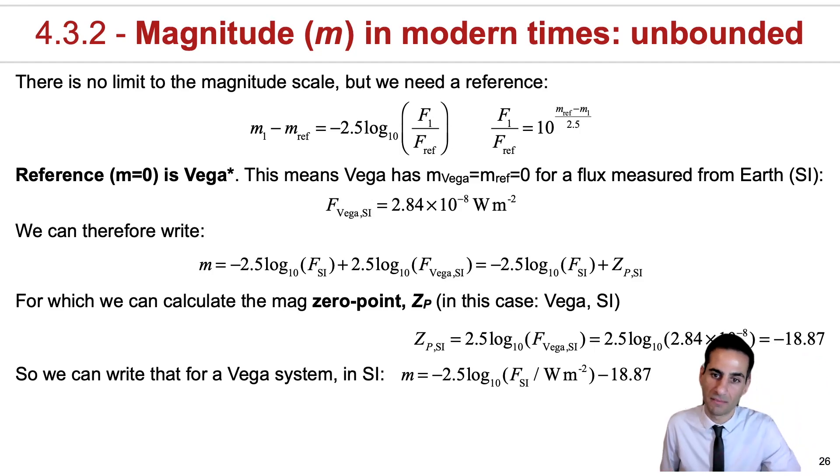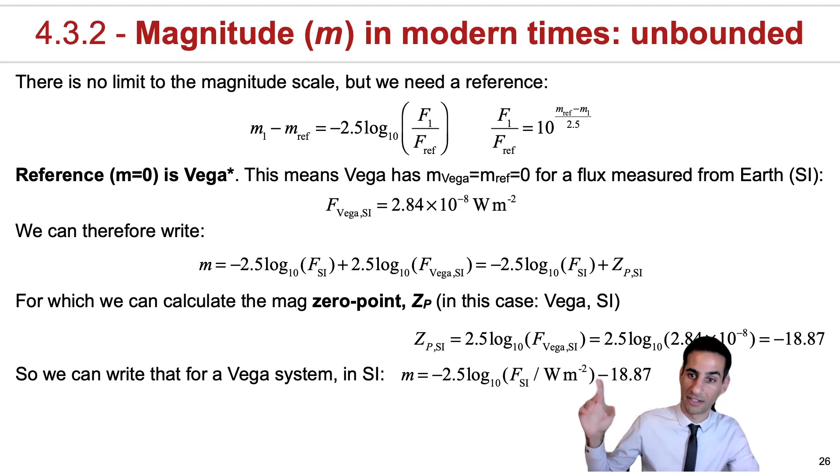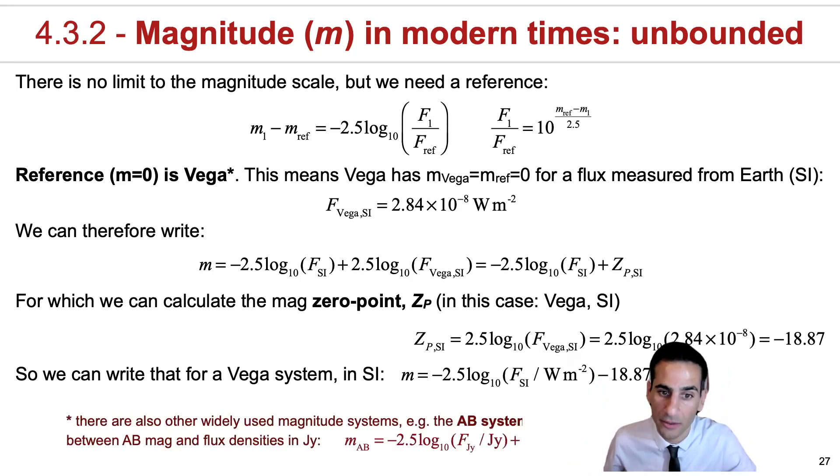The reason why this is nice and useful is that for the Vega system, this is the equation you can use to calculate the magnitude of any star. Provided that you measure its flux, the flux of the star in international system units, that's watts per square meters. If you subtract 18.87, you get the magnitude.